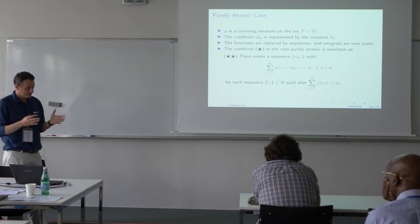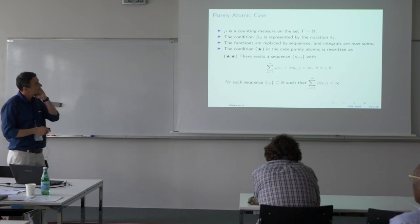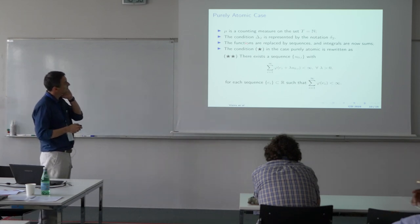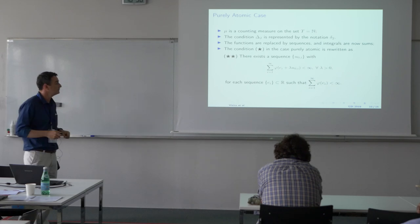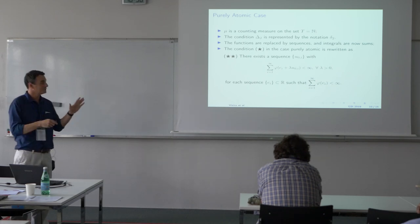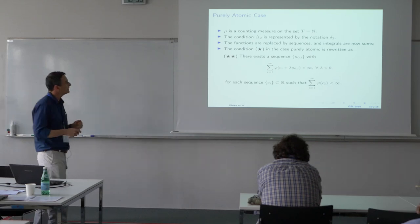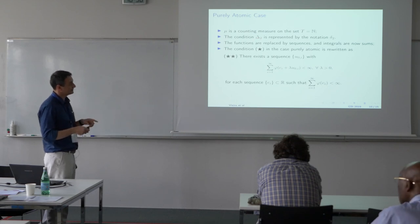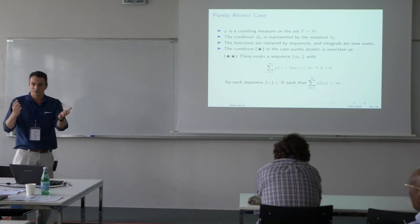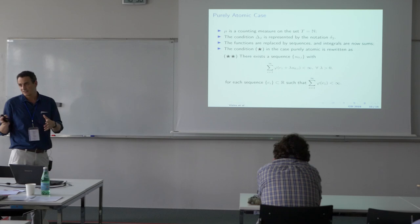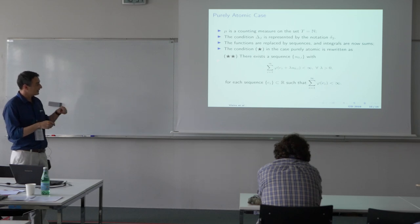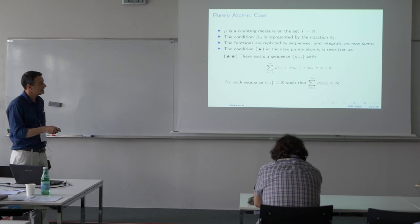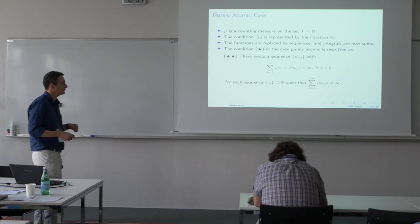We treat the non-atomic and purely atomic cases. The purely atomic case uses the counting measure on the set of natural numbers, not the reals — so it is the discrete-time case rather than continuous time. The Delta-2 condition for this setting is denoted by small delta-2, to differentiate the space being considered. The functions are sums and sequences rather than integrals. For the purely atomic case, the star condition is equivalent to the double-star condition: the sum of those functions is bounded, replacing the integral.